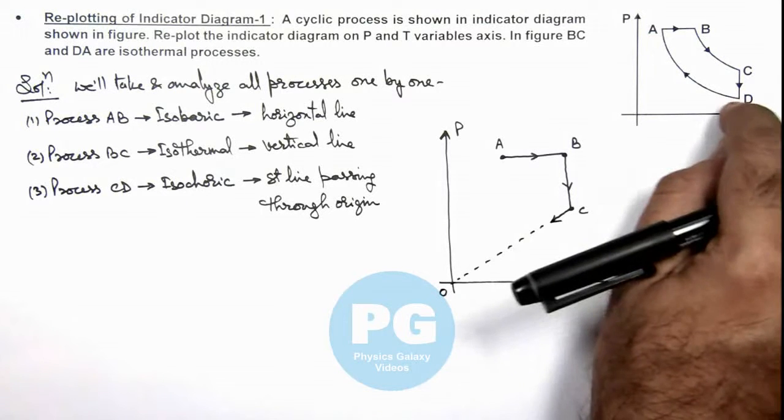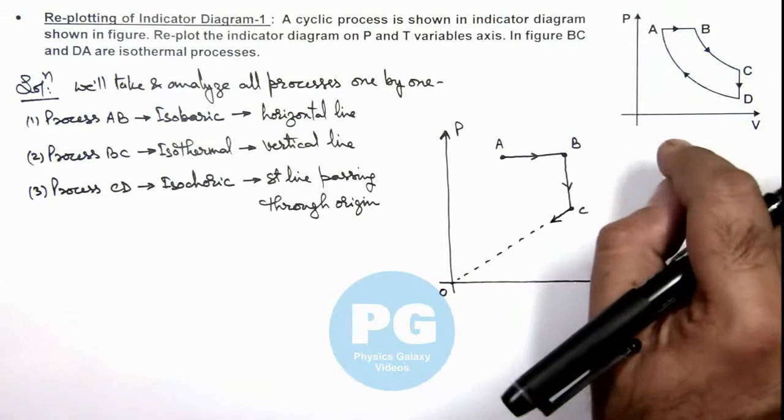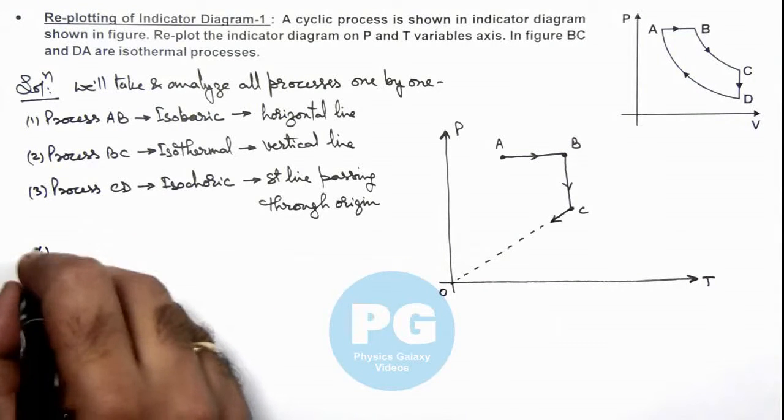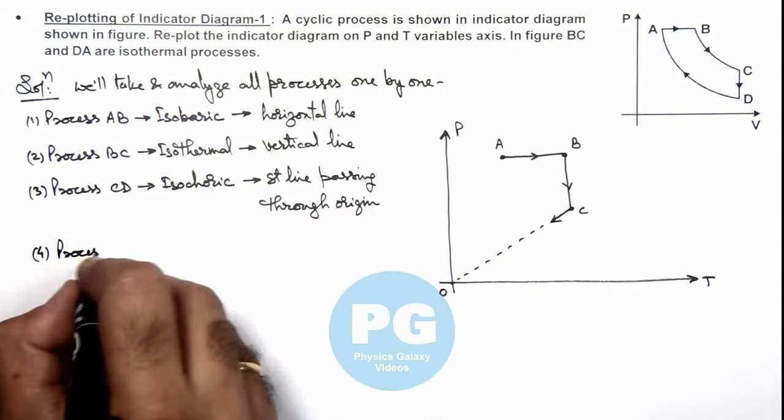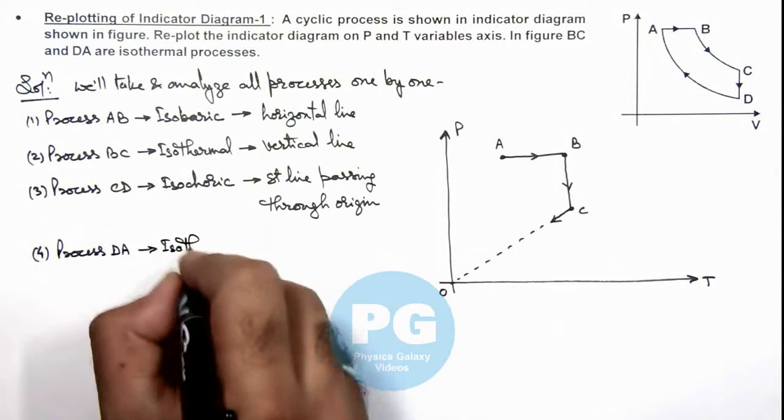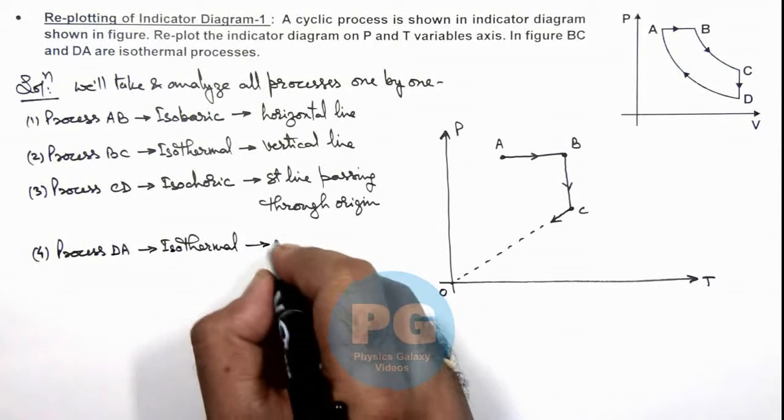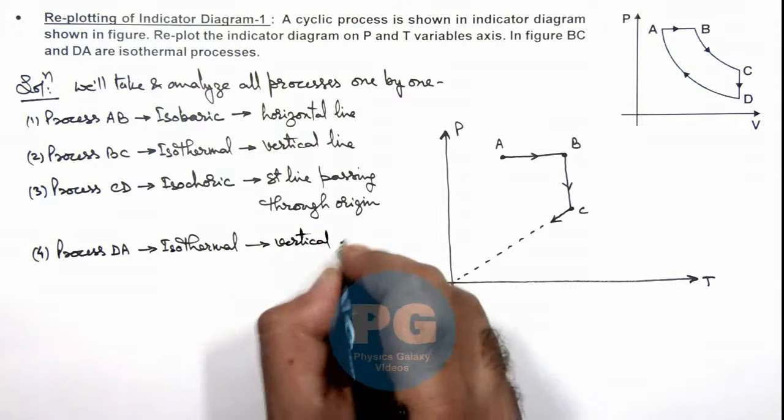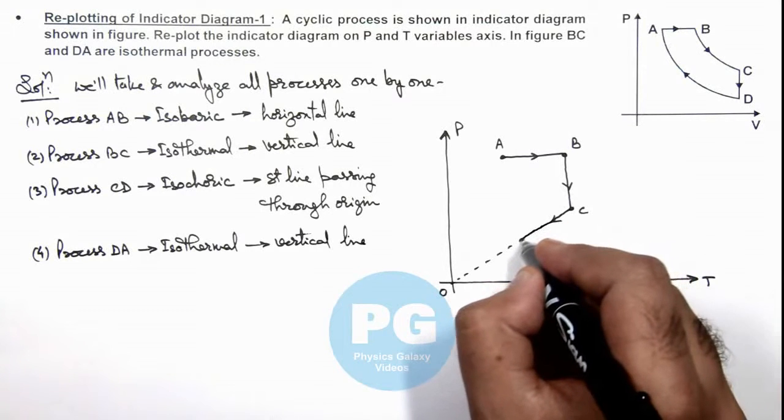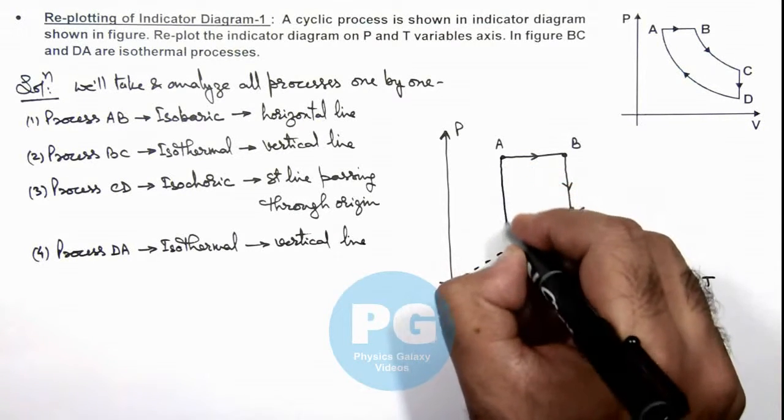And we can see that after process CD, the gas is being taken along an isothermal process from D to A. So the fourth process is process DA, which is again isothermal, and it should also be represented here by a vertical line. So in this situation, point D will be taken up to a point so that D can be joined with A by a vertical line.